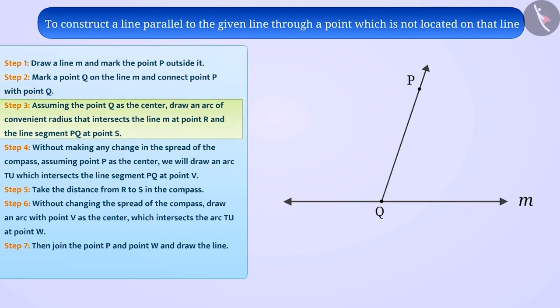Step 3: Placing the pointed end of the compass at Q and with Q as center and a convenient radius, draw an arc cutting M at R and PQ at S. Step 4: Now, with P as center and the same radius as in step 3, draw an arc TU cutting PQ at V.